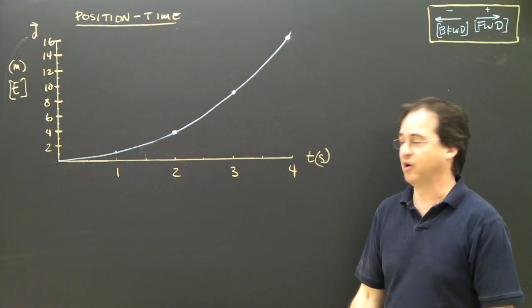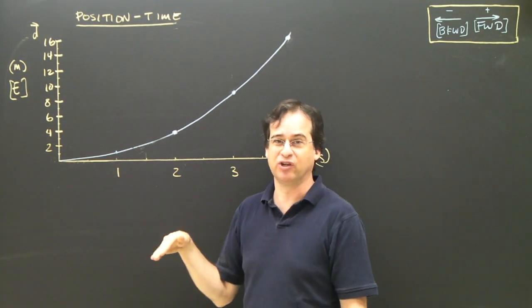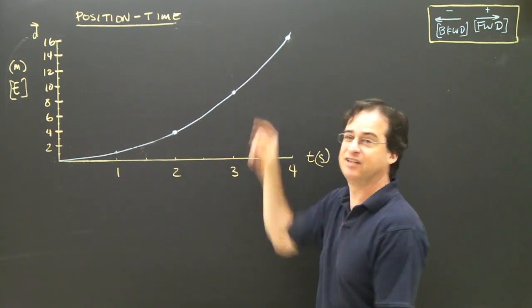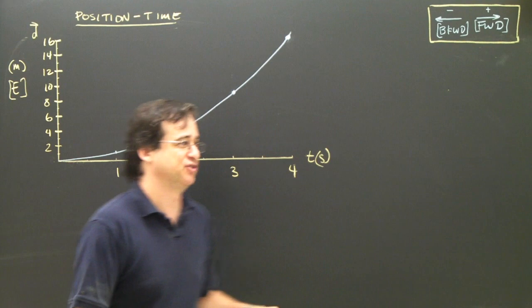Let's take a look at this position-time graph. It's quite a bit different than the other ones we were looking at, because they all had diagonals and horizontal lines. This is definitely a curve. So let's look at what this object is doing.